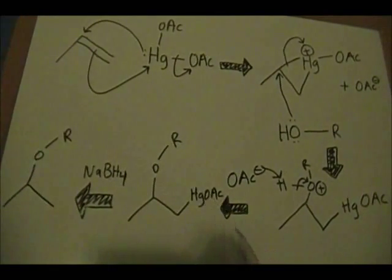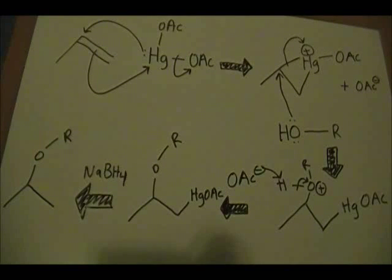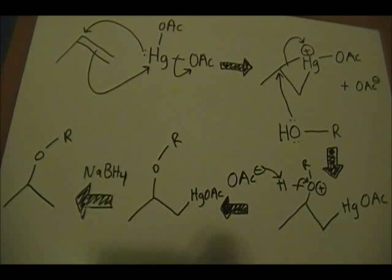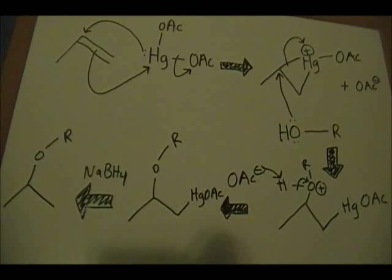Alkoxymercuration is a pretty standard and easy way to form an ether. Stay tuned to the next part where I'll be explaining and discussing the Williamson Ether Synthesis. Thank you for watching the first part of this two-part series.